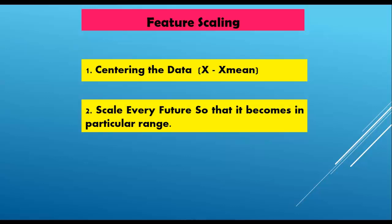Let's discuss what feature scaling does internally. First, it performs centering of the data — for example, subtracting every data point by the mean (average value) of that column. In the second step, it scales every feature so that it falls in a particular range, between 0 to 1 or between -1 to 1. There are many ways to scale — we can divide by the maximum value or by the standard deviation. There are many scalers available; we will discuss the most widely used feature scaling techniques.